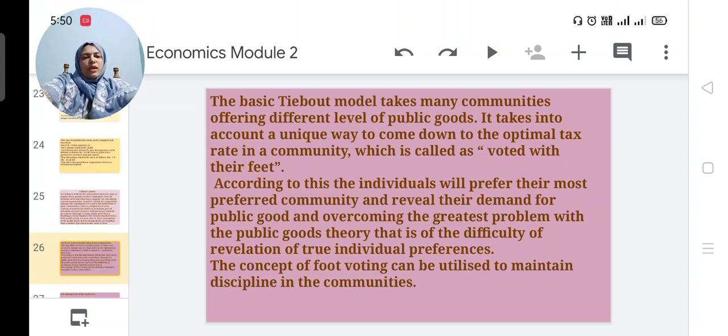The basic Tiebout model takes many communities offering different levels of public goods. It takes into account a unique way to come down to the optimal tax rate in a community, which is called voting with their feet. According to this, the individuals will prefer their most preferred community and reveal their demand for public goods and overcoming the greatest problem with the public goods theory, that is the difficulty of revelation of true individual preference.